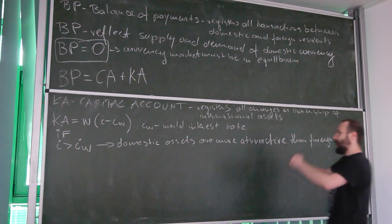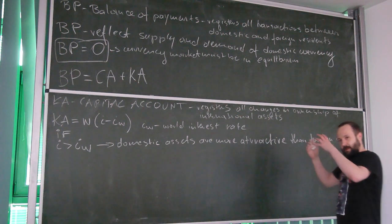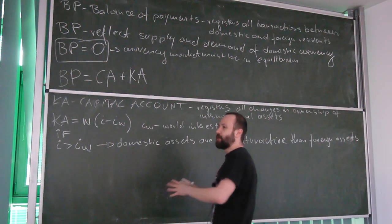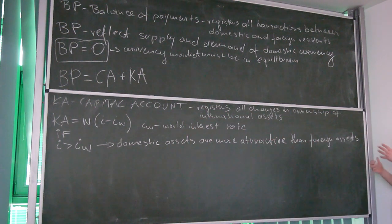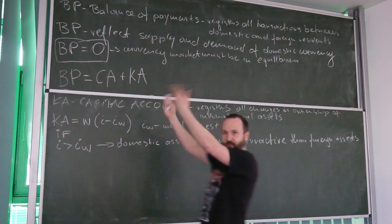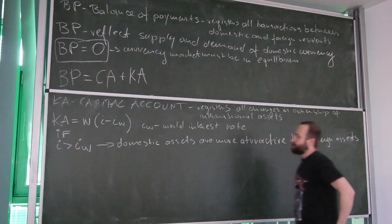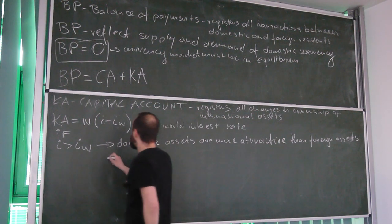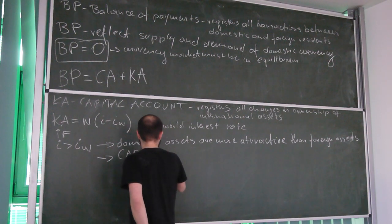If our assets are more attractive than foreign assets, then foreigners will want to buy our assets, and our domestic residents will now be willing to sell foreign assets in order to buy domestic assets. So in this case, the economy should observe capital inflow.